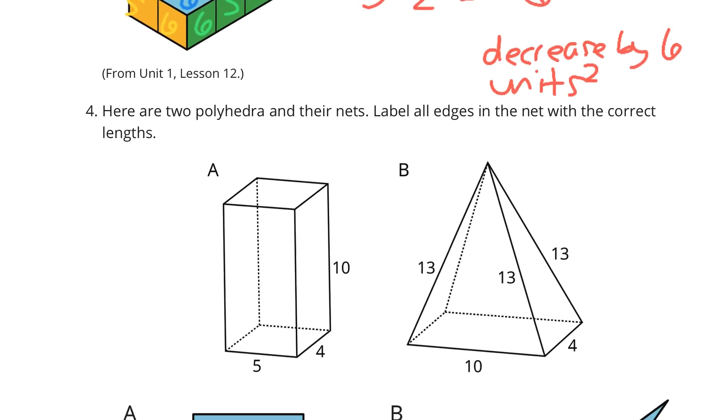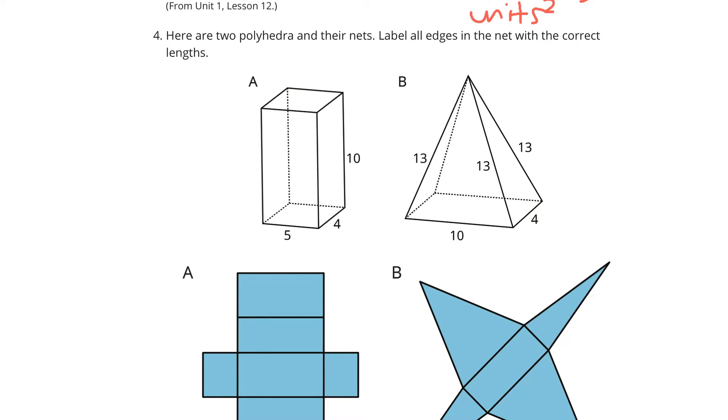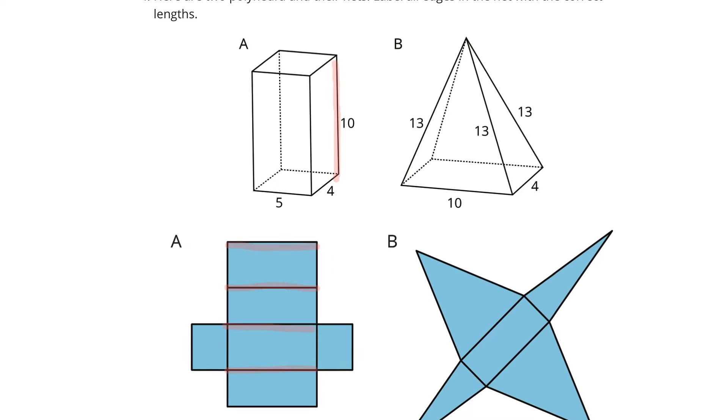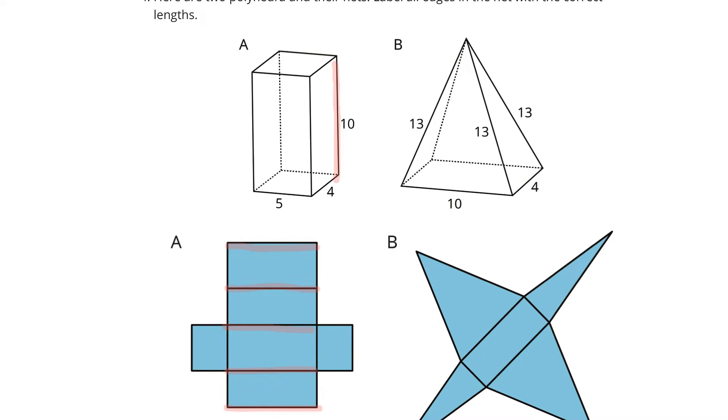Question four. Here are two polyhedra and their nets. Label all edges in the net with the correct lengths. Well, let's focus on these lengths that are 10 in A first. That looks like the longer edges here, there, here, here, and I need to scroll up a little bit there, so we can label all those as 10.